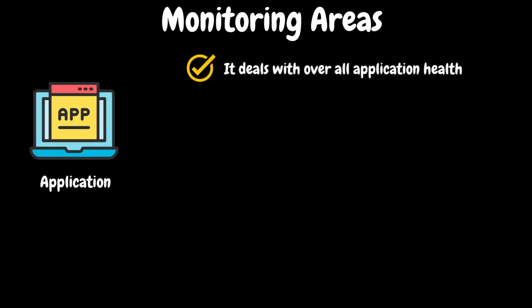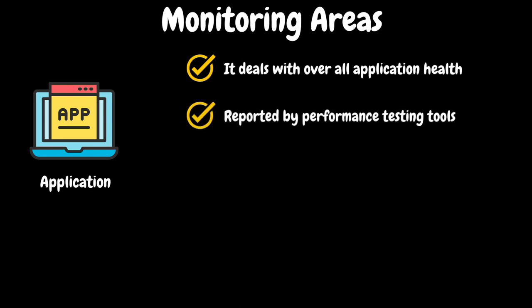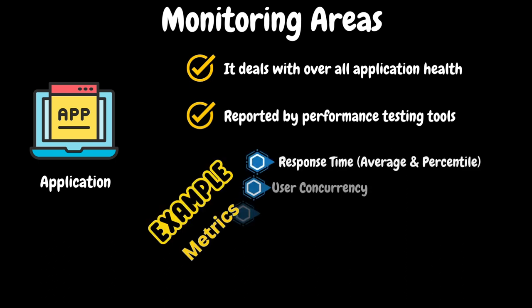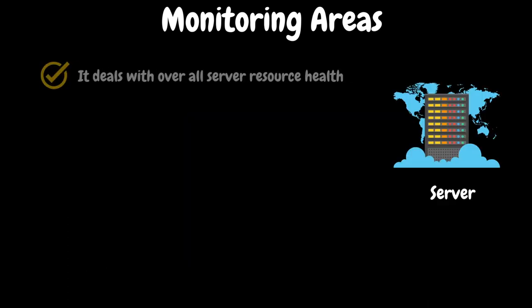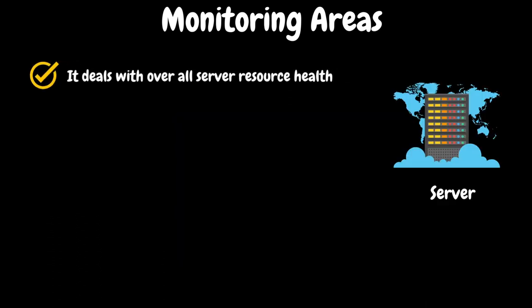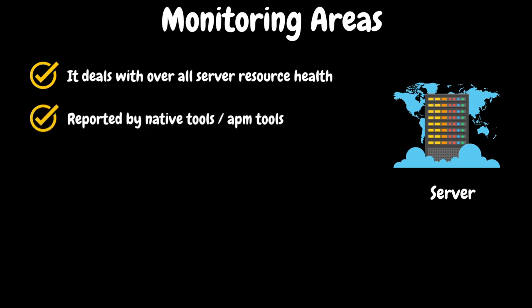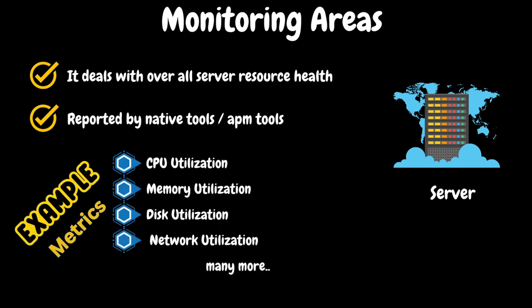Application monitoring will be done to monitor the overall application health. The application health metrics will be reported by performance testing tools like LoadRunner, JMeter, etc. Some of the application health metrics are response time (average, minimum, maximum, percentile like 98th or 95th percentile), user concurrency, server throughput measured in terms of TPS, successful server hits, HTTP errors, and many more. Server monitoring will be done to monitor the overall server resource health. We can monitor server health using the available native inbuilt tools or APM tools. Some example metrics are CPU utilization, memory utilization, disk utilization, network utilization, etc.